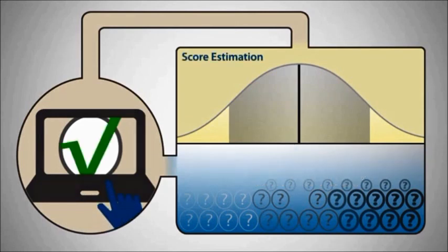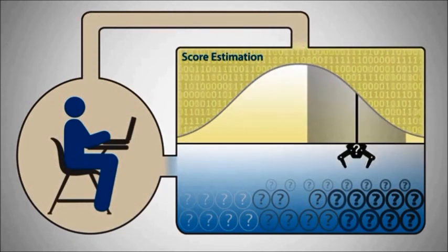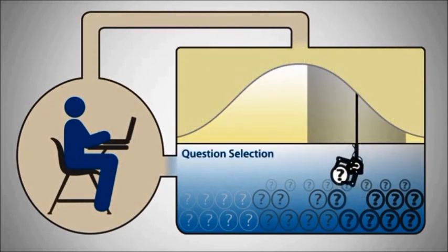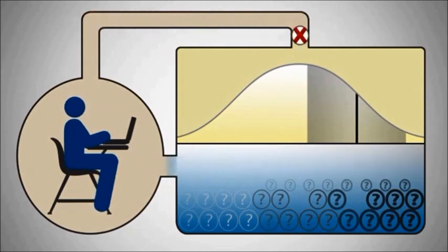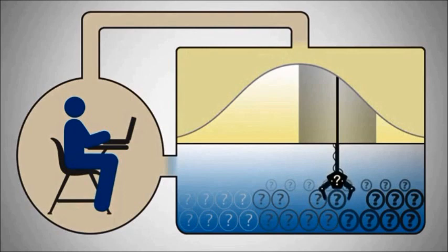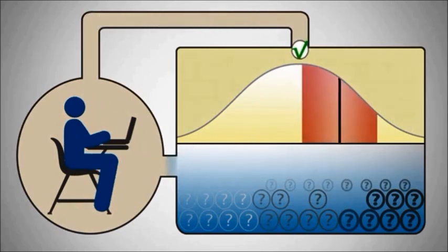The second step uses the student's responses to refine the estimated score so that the next question can be even more appropriate for that student. This cycle continues until a specified number of questions have been administered or until the desired degree of score precision is reached.